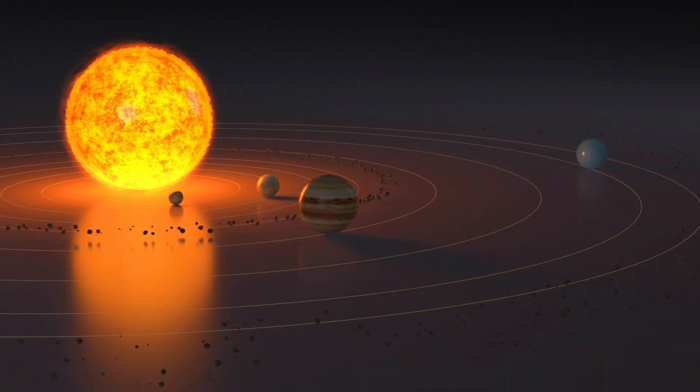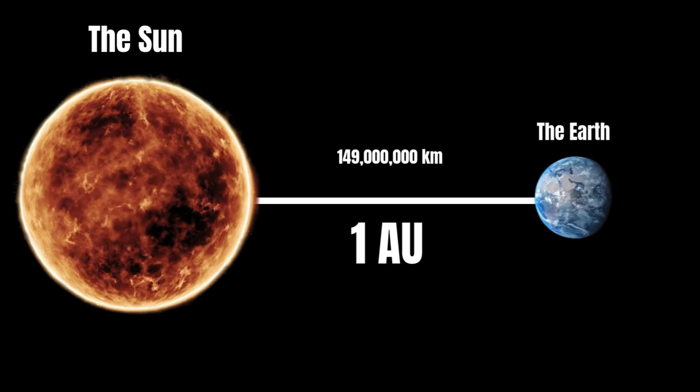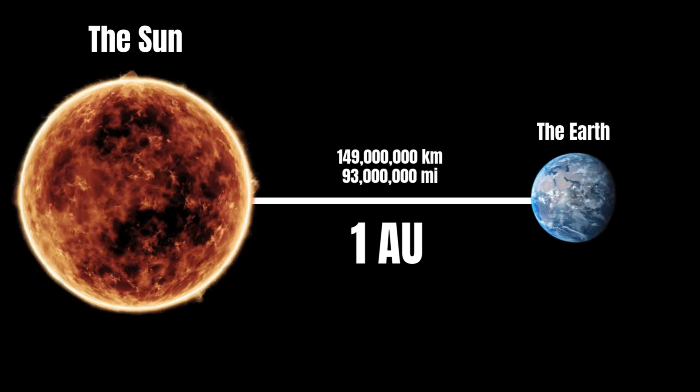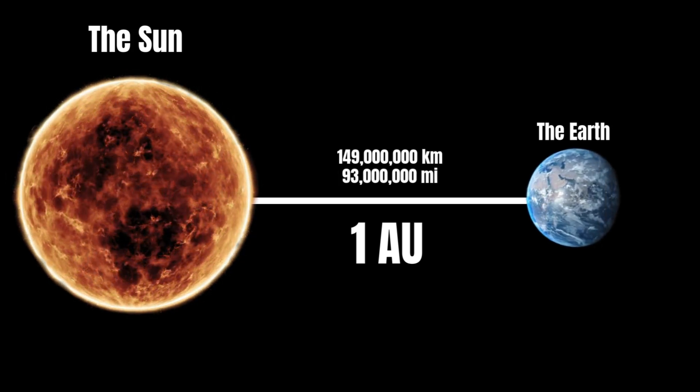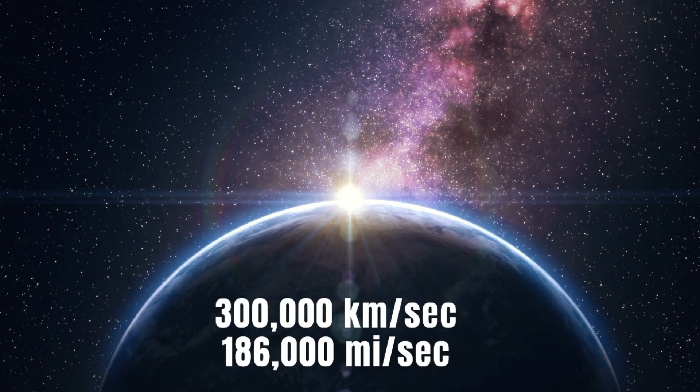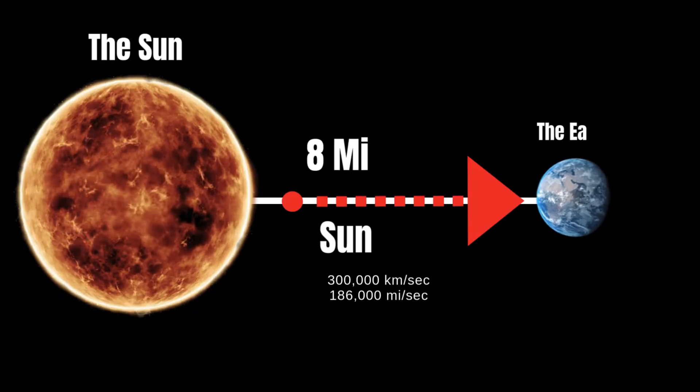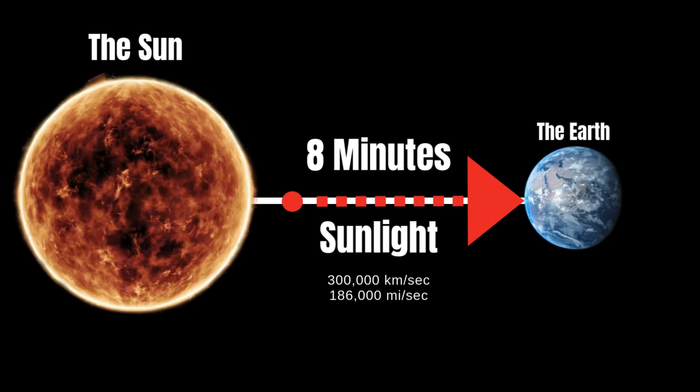Continuing outward, we encounter the sun, roughly 150 million kilometers from Earth, one astronomical unit. Light, moving at 300,000 kilometers per second, takes just over 8 minutes to make this journey.